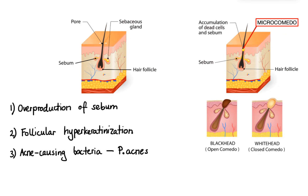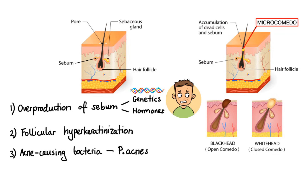Overproduction of sebum is generally the result of excessive growth and activity of the sebaceous glands, which leads to clogged pores that trigger spots of inflammation. The most common causes include genetics — our genes influence the size and activity of the sebaceous glands, so the larger and more active the glands, the greater the chance of developing acne — and hormonal changes. For example, at puberty the body begins producing more androgen-type hormones, which cause the sebaceous glands to enlarge and produce more sebum.